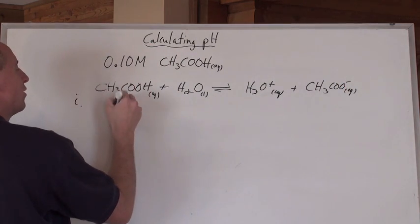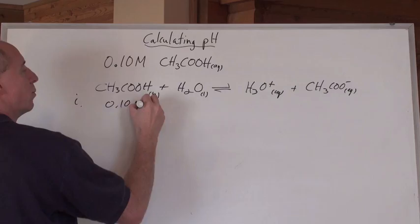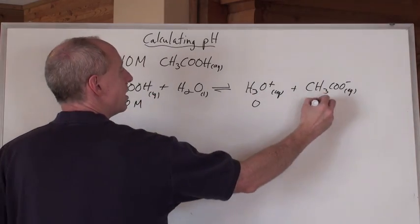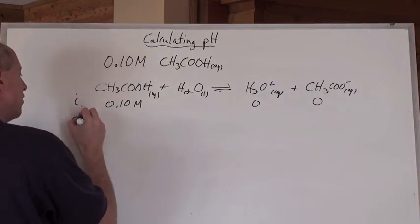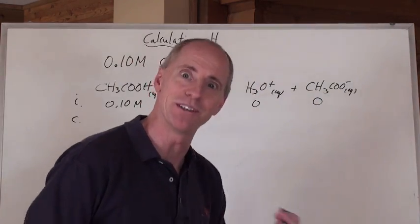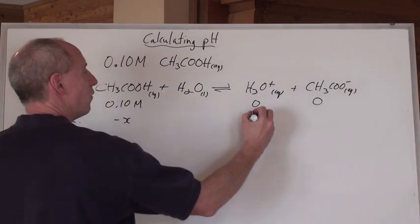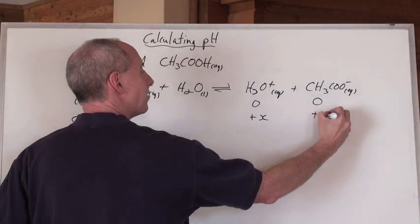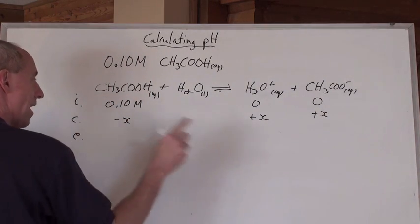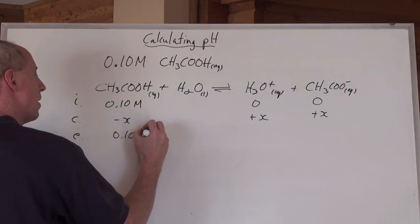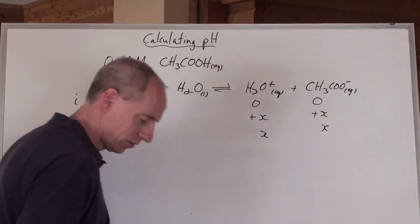Guess what? You've got an initial concentration here, 0.10 moles per liter, but you ain't got nothing here initially and nothing here initially, and then there's a change, and then equilibrium. This is an equilibrium problem. And so this is going to lose X of itself to make X here and X here, to be able to get at equilibrium 0.10 minus X, X, and X.